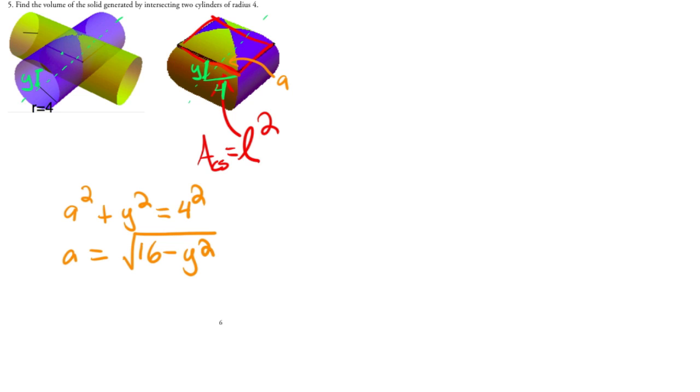Okay, so then what that means is that the area of the cross-section is simply going to equal twice this guy squared, because A is just half of the length.